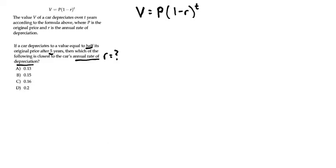For example, if P equals 1000, then V equals 500. We can plug in any numbers we want as long as V is exactly half of P.